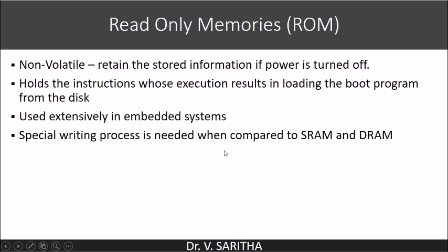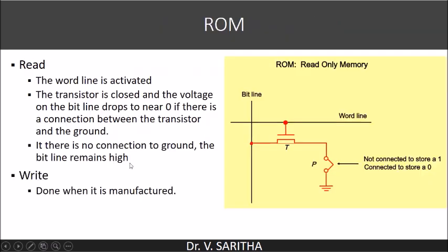We require a special writing process when compared to RAM, that is random access memories. This is how your ROM cell will be constructed. In the case of a read operation, the word line is activated. The transistor is closed when we activate this word line, so the voltage on the bit line drops to near zero if there is a connection between the transistor and the ground.